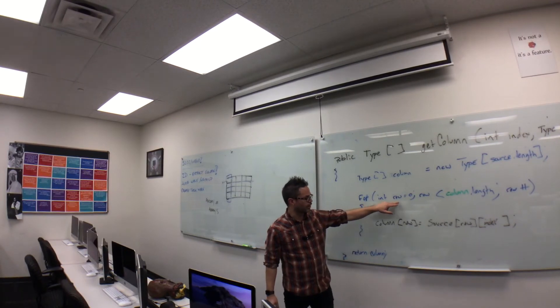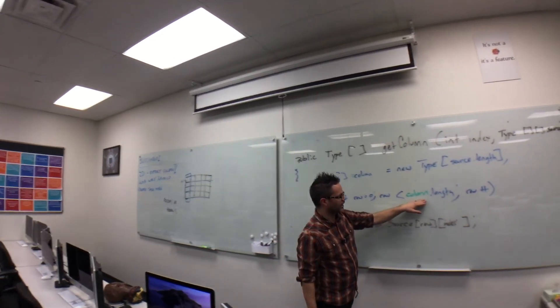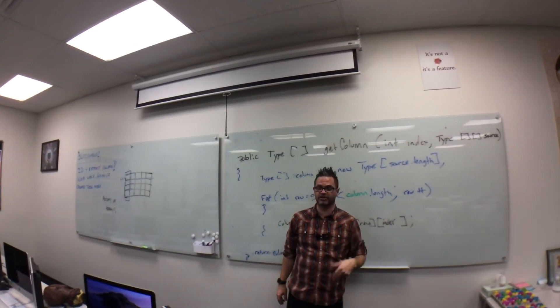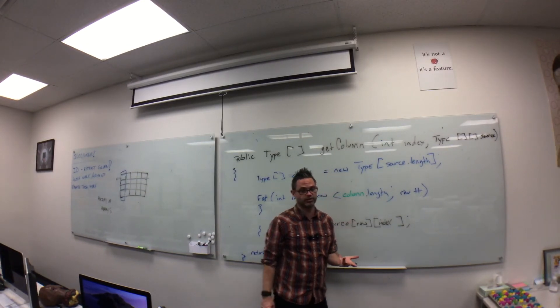So for int row equals 0, row is less than column.length, and row plus plus. Again, specifying the order we're working with, and we could possibly go backwards if we wanted to.